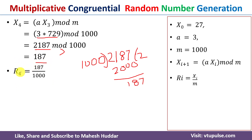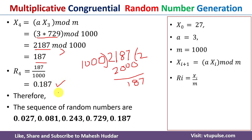R₄ = 187 / 1000 = 0.187. This is the fifth random number. Therefore the complete sequence of random numbers generated is: 0.027, 0.081, 0.243, 0.729, and 0.187. We have calculated five random numbers using the multiplicative congruential method for the given initial values.